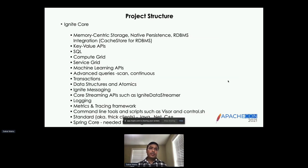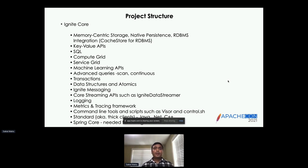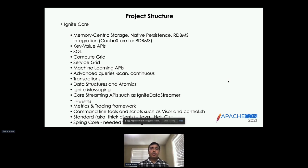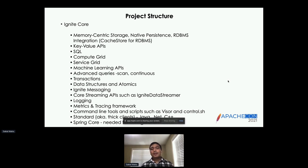Now let's look into the project structure for Ignite. In Ignite, we have primarily memory-centric storage, native persistence which allows you to write data to disk, RDBMS support, key-value APIs for your cache store, SQL support, compute and service grid for running your jobs, a set of machine learning APIs, and also the ability to run scan and continuous queries or transactions in your datasets. We also have data structures and atomics for some specific business use cases.